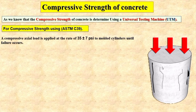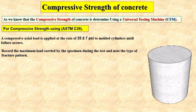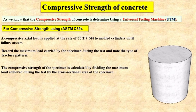As you can see from this picture, the load is applied to the molded cylinder and failure occurs. After applying the load to the specimen, record the maximum load carried by the specimen during the test and note the type of fracture pattern. The compressive strength is then calculated by dividing the maximum load by the cross-sectional area of the cylinder.